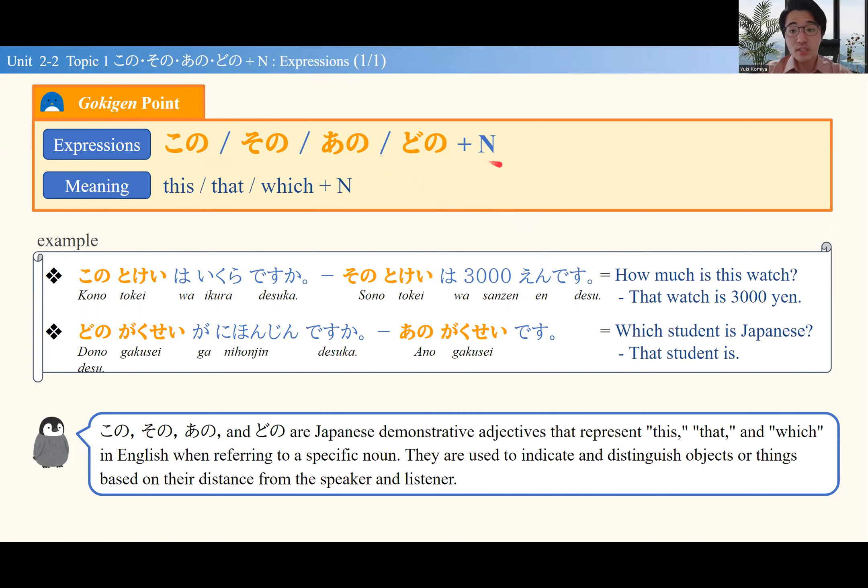They become この、その、あの、どの. So この時計 will be 'this watch'—this watch that I have right now. この時計はいくらですか. いくら is 'how much,' so いくらですか means 'how much is this watch?'